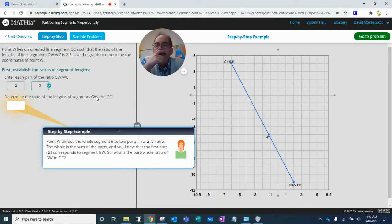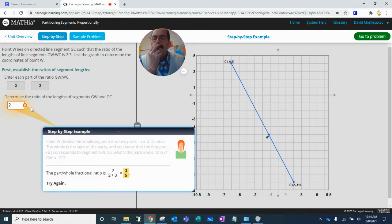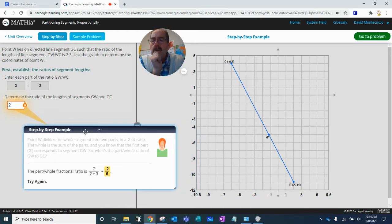Determine the ratio of the lengths GW to WC. So if we have GW two-thirds, one-third, two. The part-whole fraction is a ratio. Two of the five.